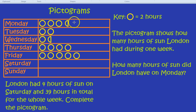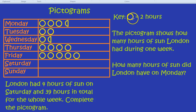Notice though, on the pictogram we have some weird little shapes. You won't always just have full shapes — you'll have half shapes and quarter shapes, and you need to work out what those half shapes and quarter shapes represent. In this case, if a full circle represents two hours of sunshine, what does a semicircle represent? That would be one hour of sunshine.